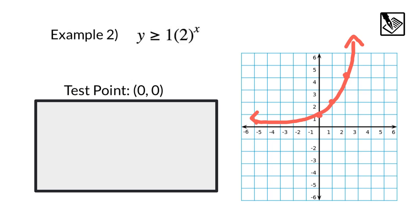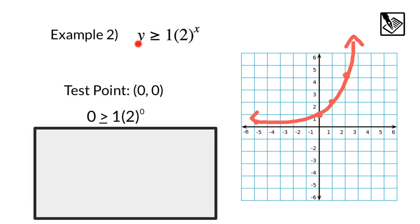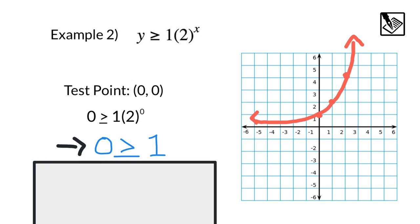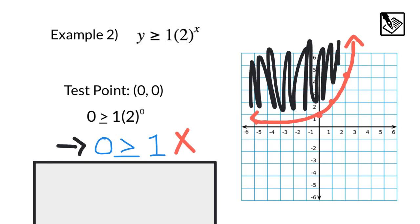And in fact, this time, I'm going to use often what is the easiest test point to use, zero, zero. And zero is often a good point to choose because it makes evaluating a little bit easier. So if I substitute that in, zero for y, zero for x, we'll have zero is greater than or equal to one times two to the zero. Two to the zero is one, which gives us zero is greater than one. This is not correct. Zero is less than one, which means that my test point zero, zero is not on the side with the solutions. So I know that my graph is going to have solutions above the curve.